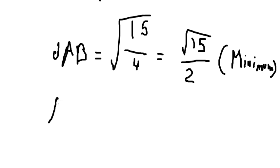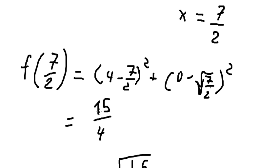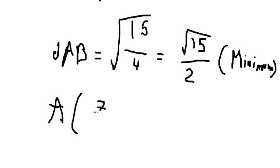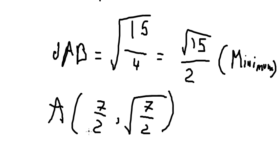So the location of point A: S equals 7 over 2, and y equals the square root of 7 over 2. Therefore, going to this point, the minimum distance of AB is the square root of 15 over 2. This is the end — thank you for watching.